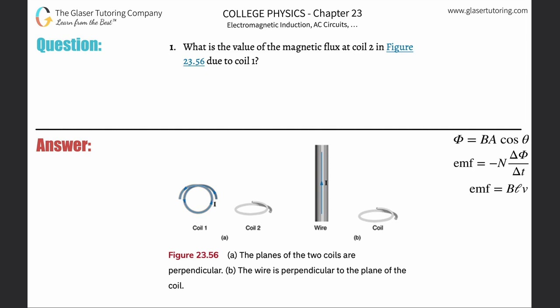Number one, what is the value of the magnetic flux at coil 2 in figure 23.56 due to coil 1? All right, so first thing is,